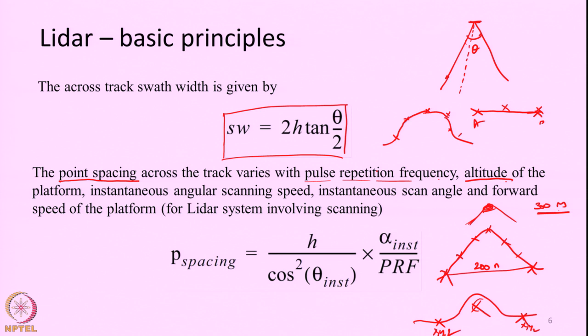For an airborne system, the point spacing is given by: altitude × cos²(θ_inst) × α_inst / PRF, where α_inst is the instantaneous angular scanning speed and PRF is the pulse repetition frequency. This is one of the important parameters to know — where the points are spaced on the ground. Up to now we have been discussing LiDAR transmission; next we discuss how LiDAR will receive the returns.